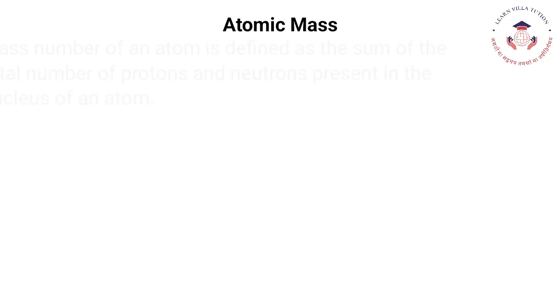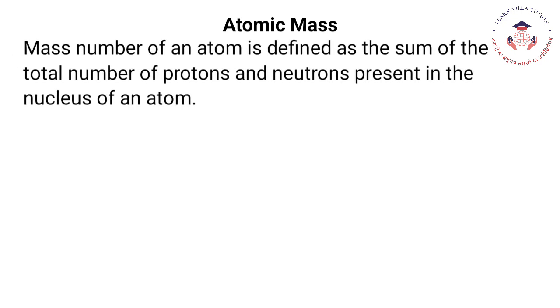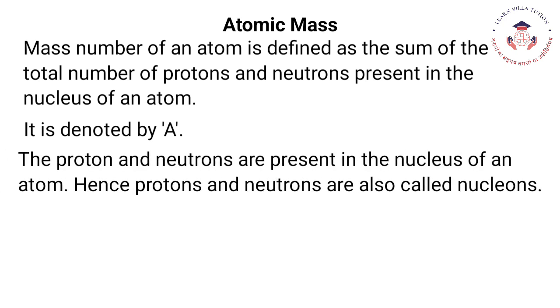Mass number of an atom is defined as the sum of the total number of protons and neutrons present in the nucleus of an atom. It is denoted by A. The protons and neutrons are present in the nucleus of an atom, hence they are also called nucleons.